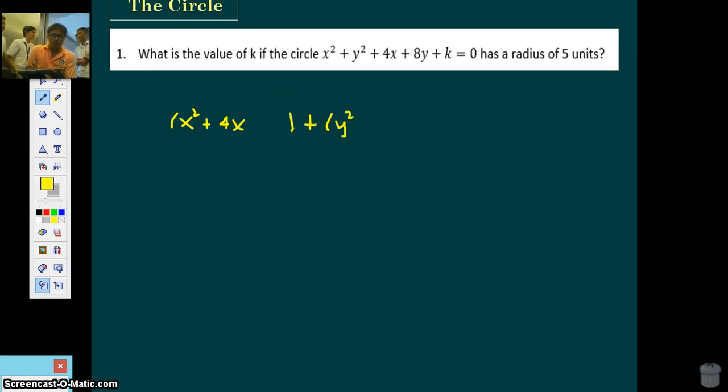So group all terms with x, group all terms with y. When you transpose that plus k term to the right, that will become minus k. And start completing the square. You should add here 4. You should add here 16. So in the right side, you're adding 4 plus 16, that's 20.